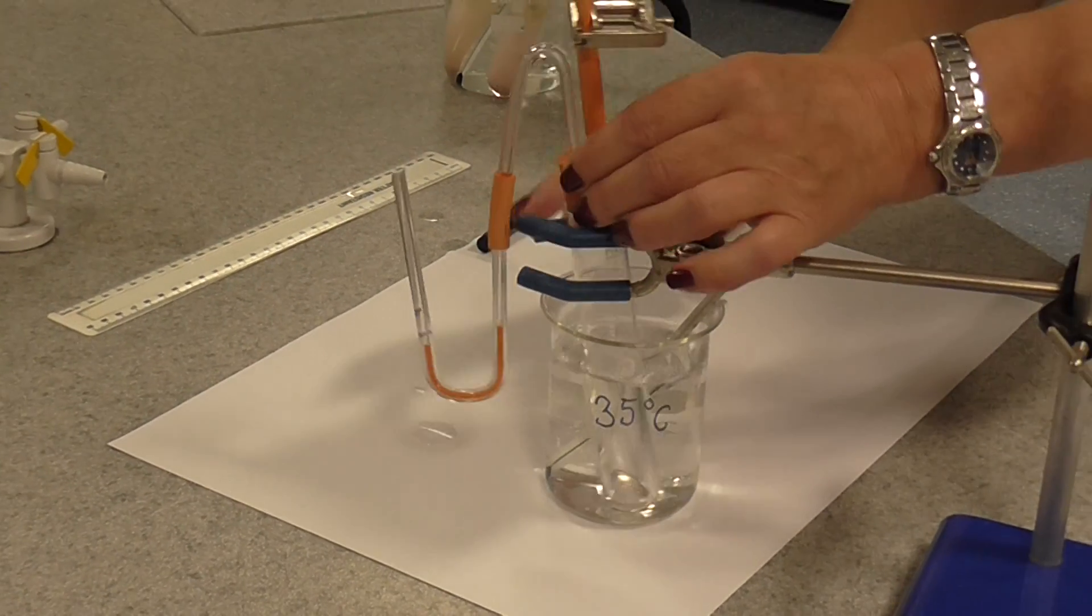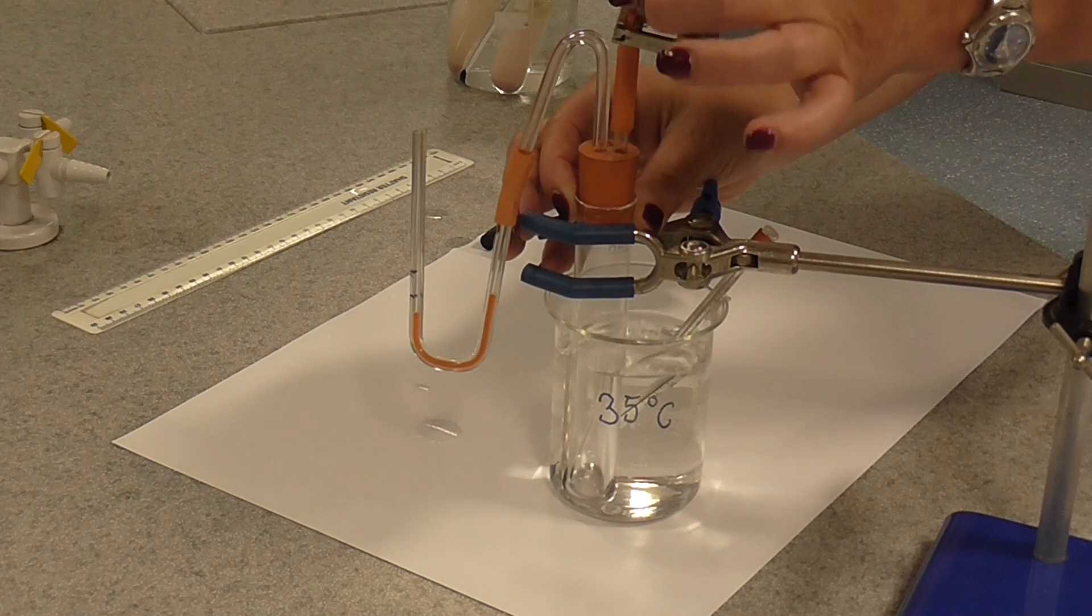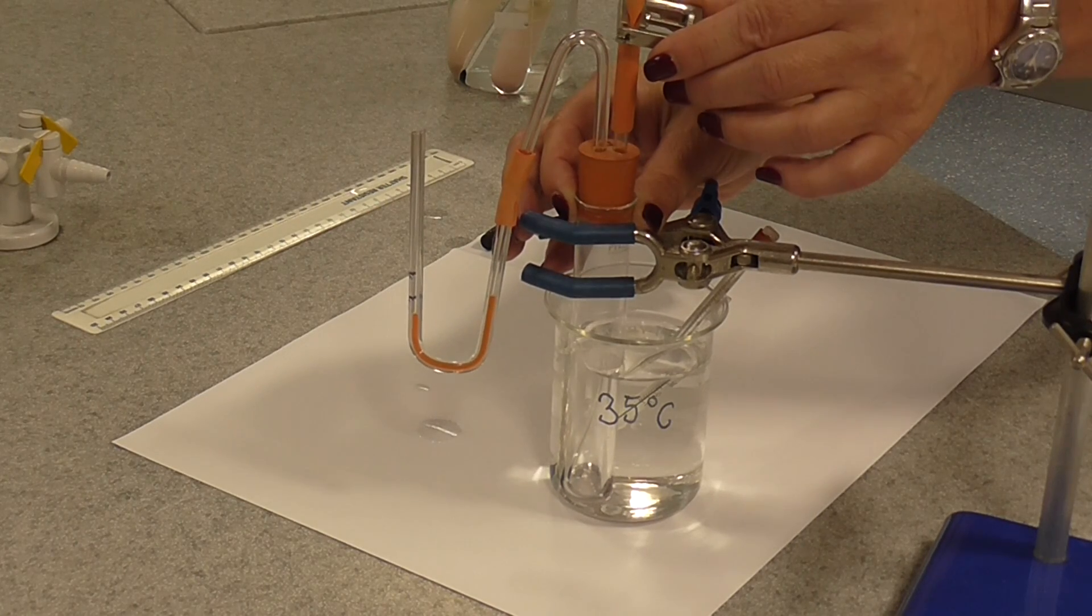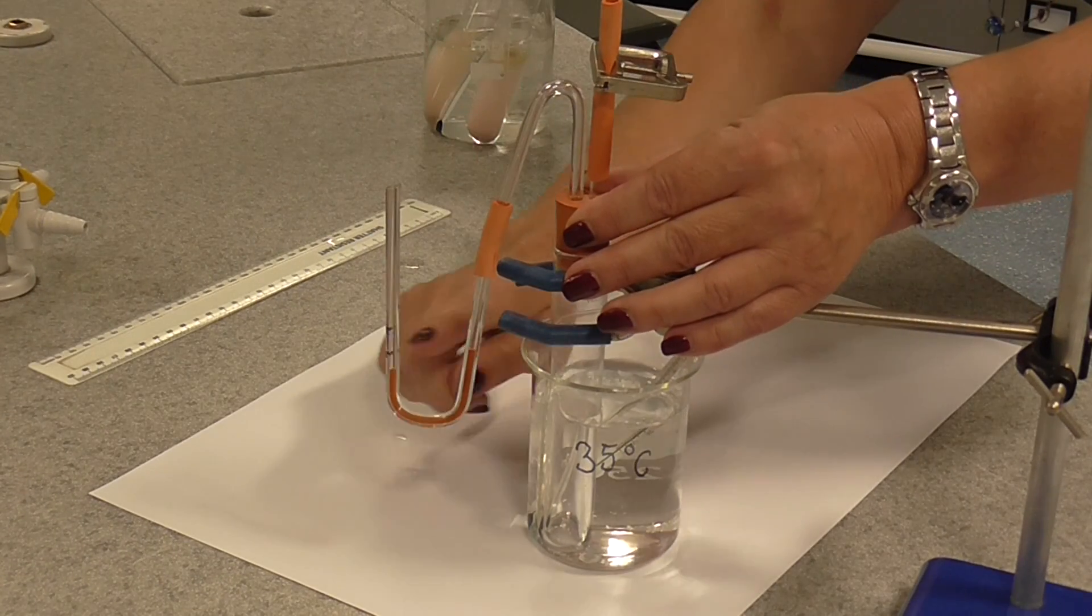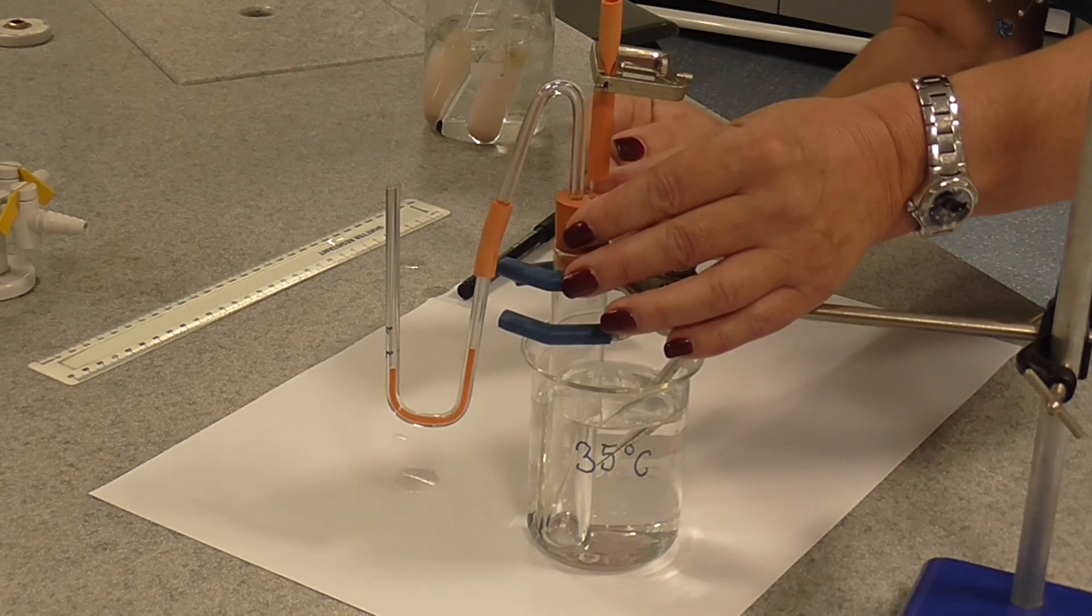So we've got our boiling tube, we've got our bung with a flexible tube with a clip, so that can be opened and closed. And here we have got our capillary U-tube, and you can see I've introduced a red fluid into that.